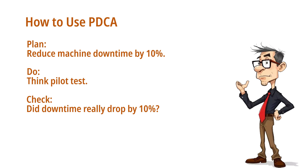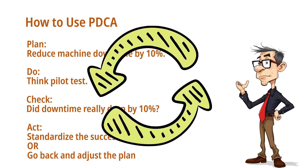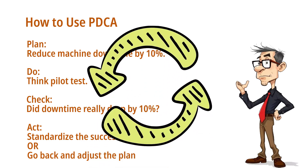Act: standardize the successful solution, or go back and adjust the plan if results aren't good enough. PDCA is not a one-time fix — it's a loop. Each cycle gets you closer to the optimal solution.